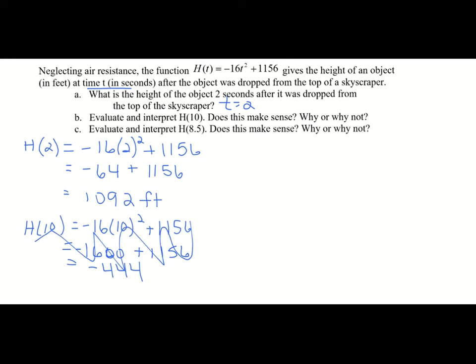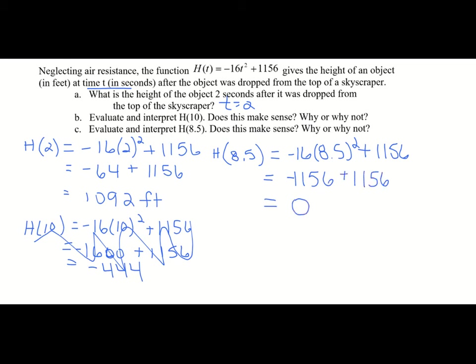Let's try h of 8.5: negative 16 times 8.5 squared plus 1,156. 8.5 squared is 72.25; times negative 16 gives negative 1,156; plus 1,156 equals zero. Does this make sense? When an object thrown off a skyscraper hits the ground, it's zero feet from the ground. So h of 8.5 tells us it takes 8.5 seconds for the object to hit the ground.